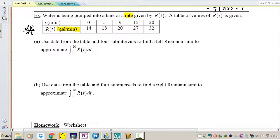Letter a, use the data from the table and four sub-intervals to find the left Riemann sum to approximate the integral from 0 to 20 of R(t). So here's 0, here's 20, and we want to separate this into four sub-intervals. It seems like you have no choice but to use every section of this interval. Here's one rectangle, here's another rectangle, another rectangle, and your fourth rectangle.